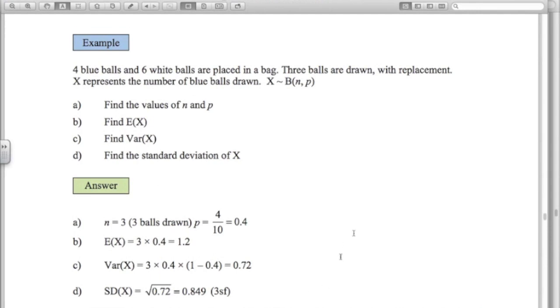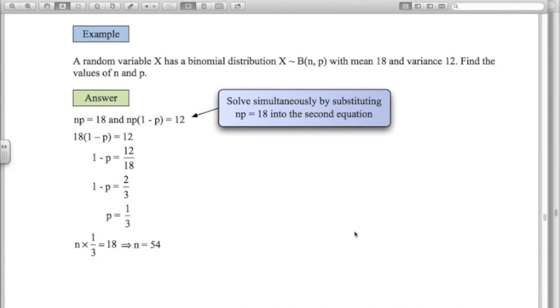Last example: the random variable X has a binomial distribution. We've got a mean and variance and we want to find the values of n and p, so we're kind of going backwards here. The way to do this is by solving these two equations simultaneously. The mean np = 18, the variance np(1 - p) = 12.